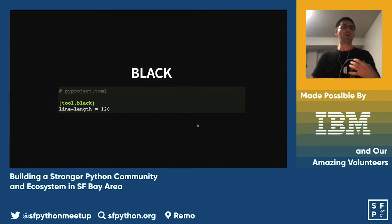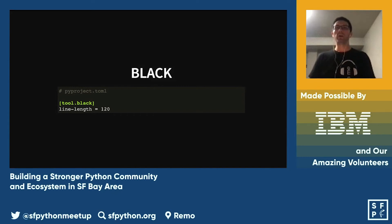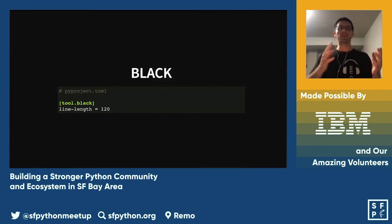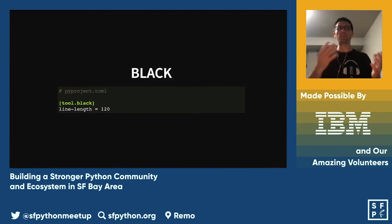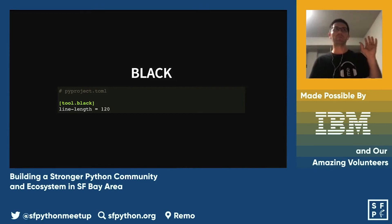In my use case, the only thing I change is the line length. I use 120 because I can still do side-by-side comparison, but you have to be careful — for open source, people with visual disabilities might need bigger fonts and 120 could be too much. The default is 88, but whatever works for you, set it and don't change it.